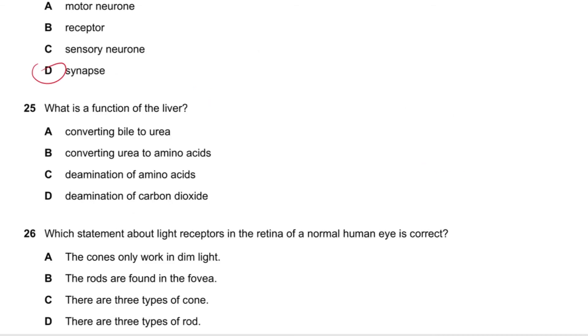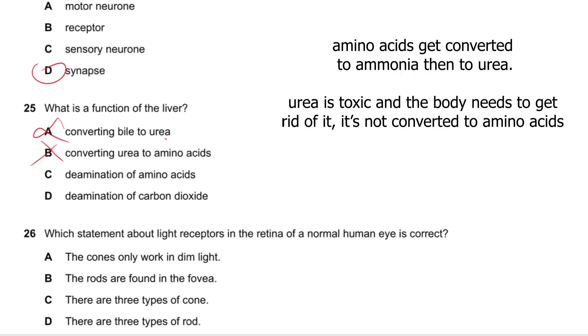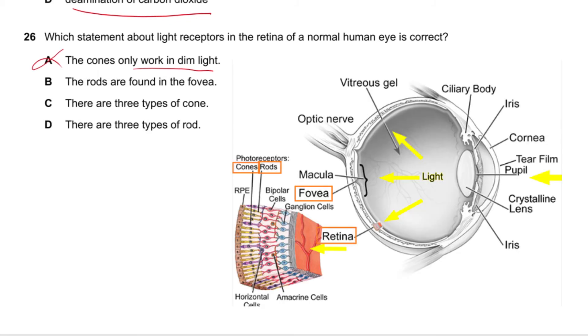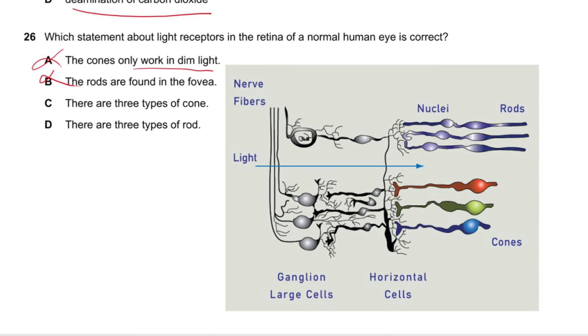Question number 25 says what's the function of the liver? Converting bile to urea? No. Converting urea to amino acids? No, because that doesn't even happen. Deamination? Yes, we all know that. Question number 26 says which statement about light receptors in the retina of a normal human eye is correct? How I remember this is cones equals color, you know. Cones only work in dim light? No, the rods are found in the fovea. They are in the retina. There are three types of cones? Yes. There are three types of rods? No.